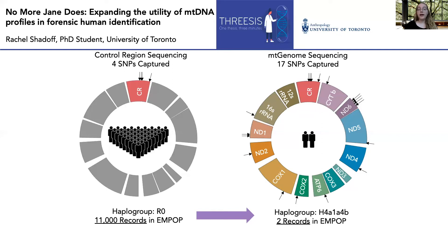But if we look at the entire mitochondrial genome, we see that there are multiple SNPs distributed through multiple genes, and we come up with a much more specific profile — the H4A1A4B subclade. The result is an increase in discriminatory power. While the MPOP database reports 11,000 individuals belonging to the RO haplogroup, only two of these individuals belong to the identified subclade.